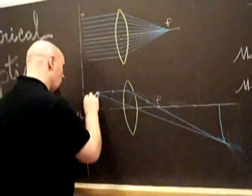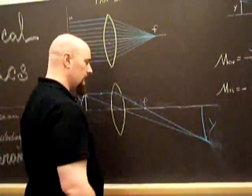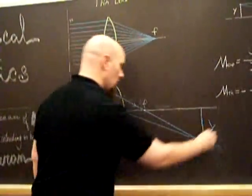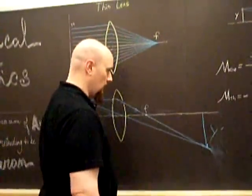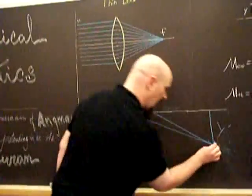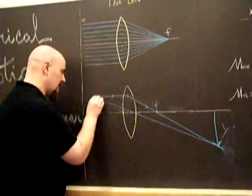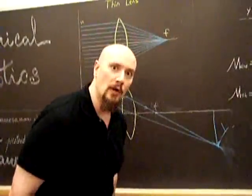Okay, great. Call that Y, the object. Y prime will be the image length. Notice, I drew the arrow downward for the image and the arrow for the object is upward because it's inverted.